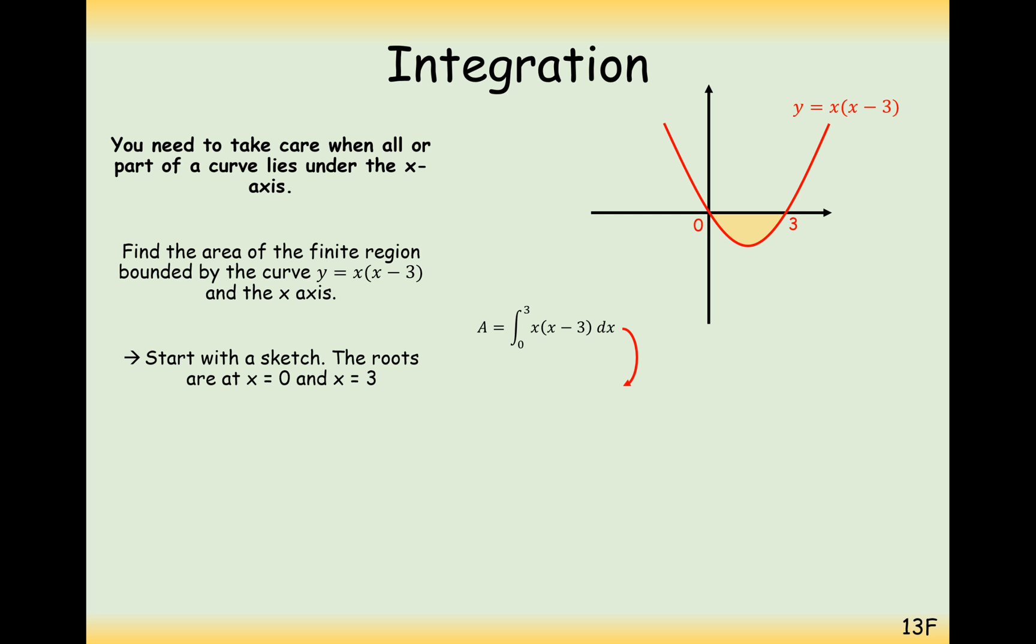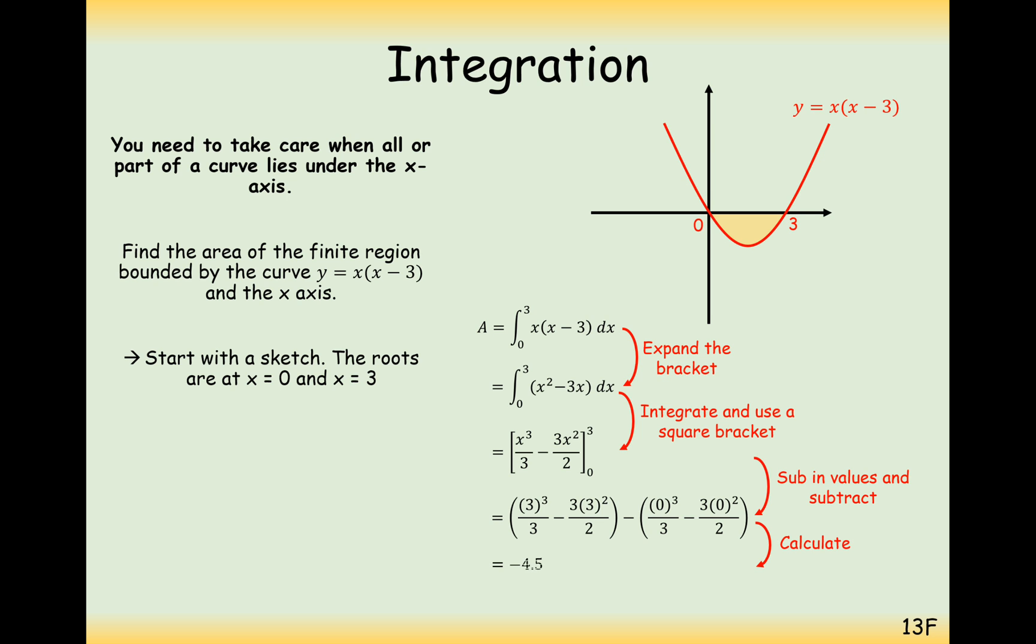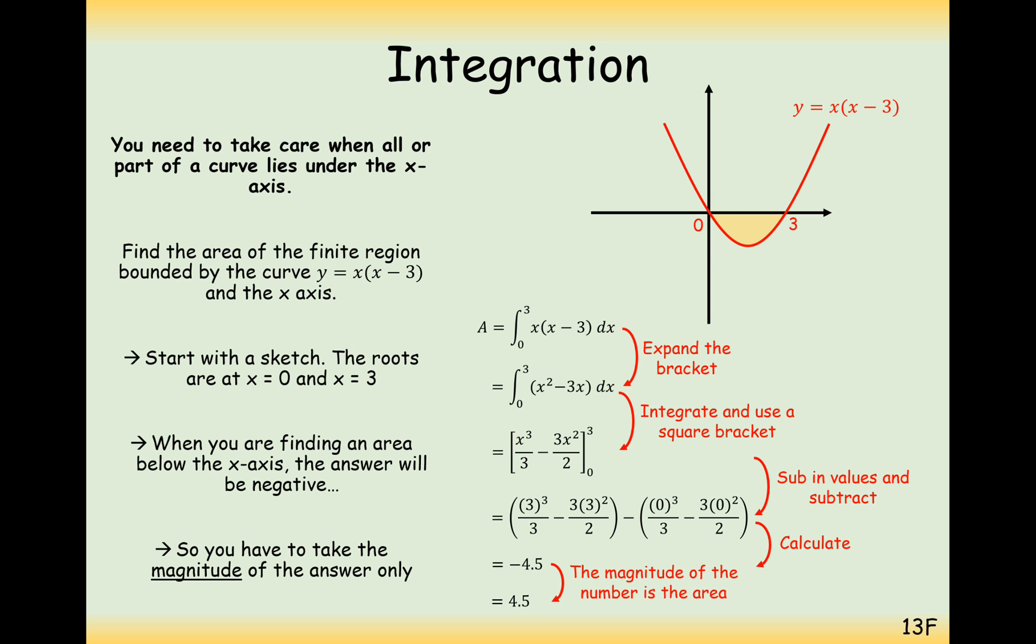Let's just show you that in action. So the area is the integral between 3 to 0 of x times x minus 3 dx. To integrate this, expand the brackets and integrate. So increase the power by 1, divide by the new power, and we're going to substitute now in 3 and 0. So we do the substitution of 3, take away the substitution of 0, and we end up with a final answer of minus 4.5. Now, what we'll do here is because we want to find an area, we'll just make that a value positive. So the area is a positive 4.5.